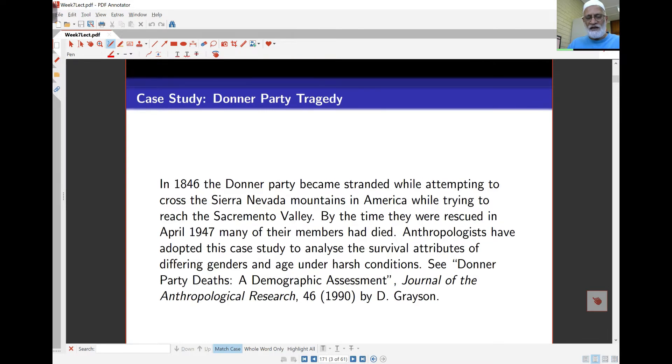The example we have seen in the last few lectures is the Donner Party tragedy. In 1846, the Donner Party became stranded while attempting to cross the Sierra Nevada mountains. By the time they were rescued in April 1847 (I reckon that should be 1847 actually, I'll check the dates), many of the members had died.